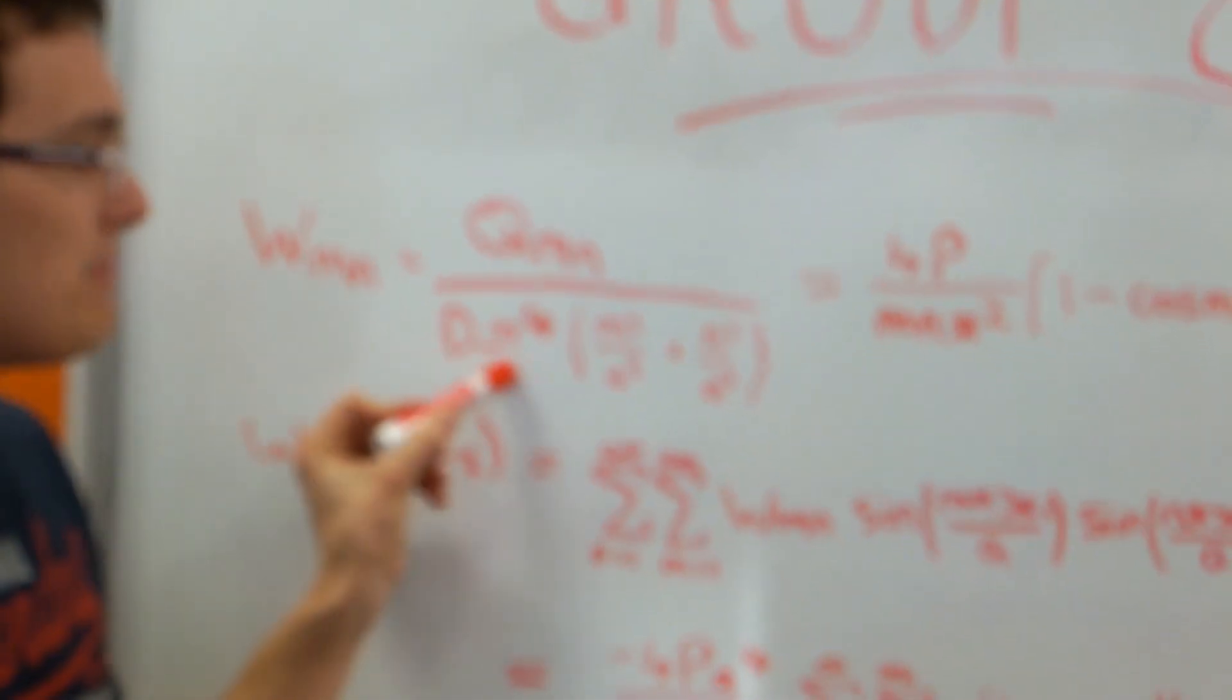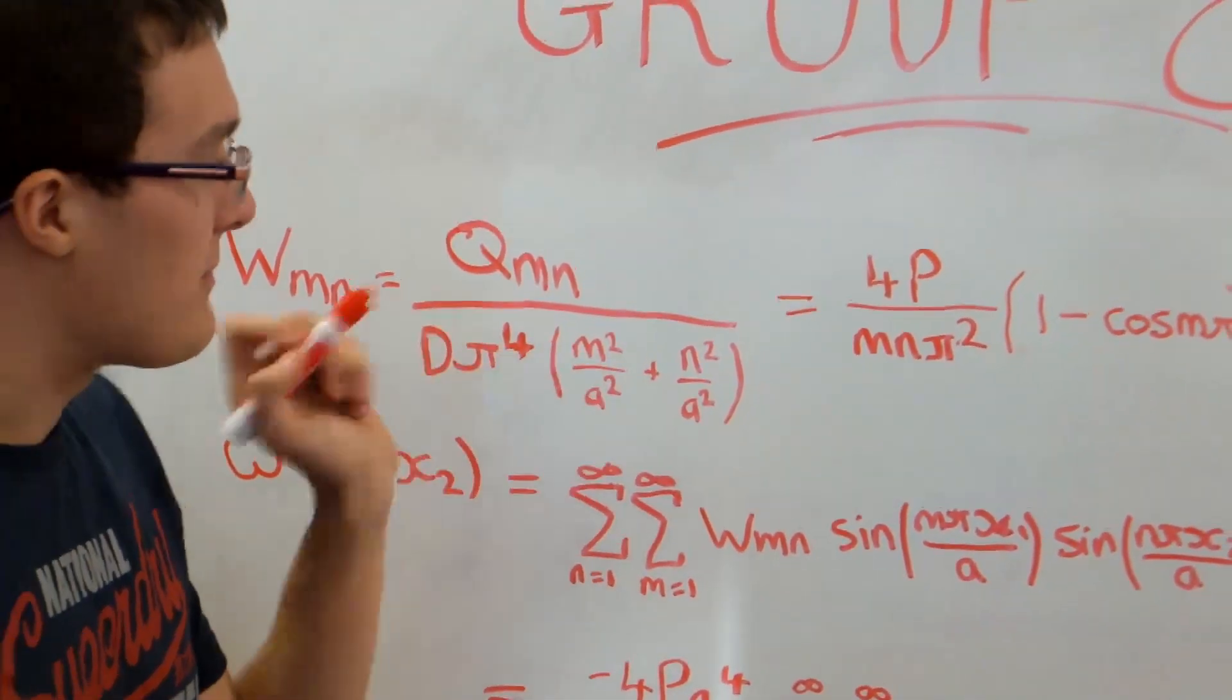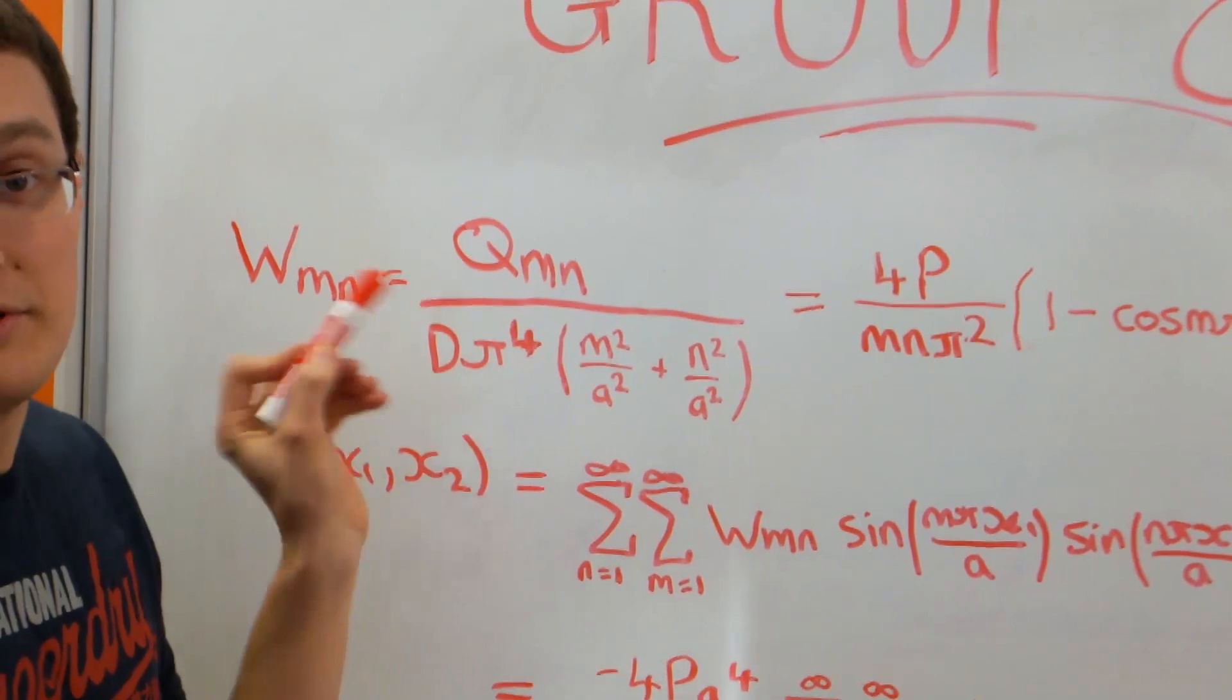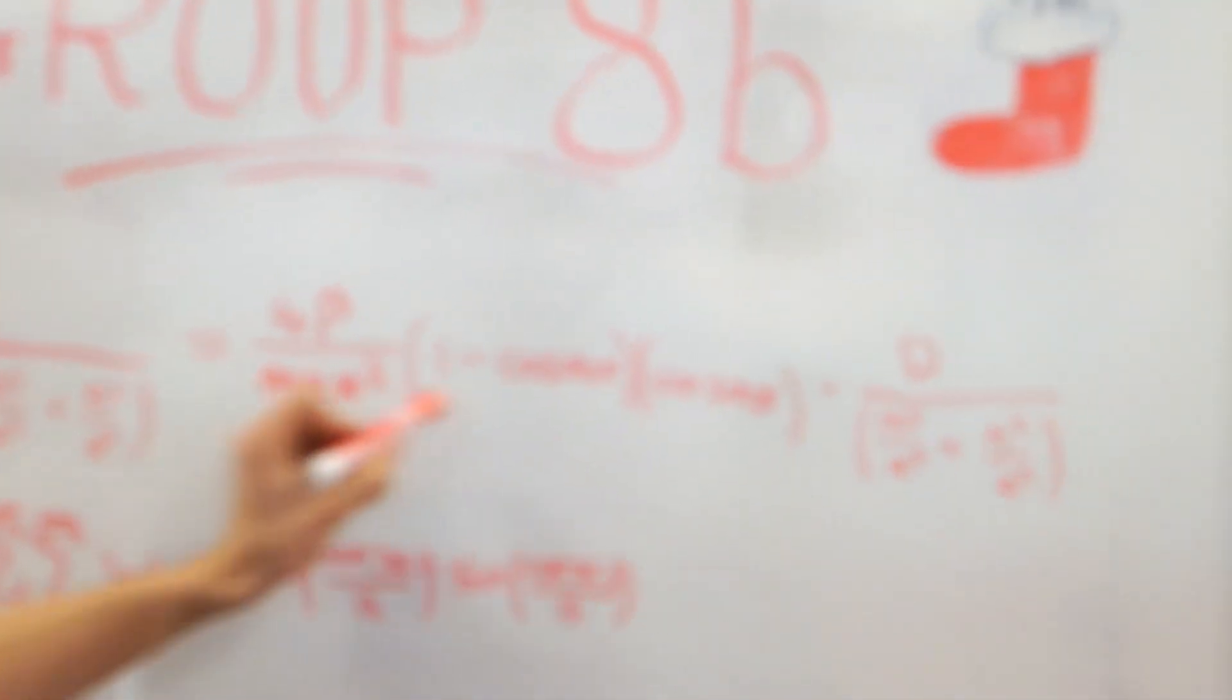And it's over d pi to the 4 brackets m squared over a squared plus n squared over a squared. So you substitute in Qmn, which you just found in the last step. And this gives you this lovely equation straight over here.